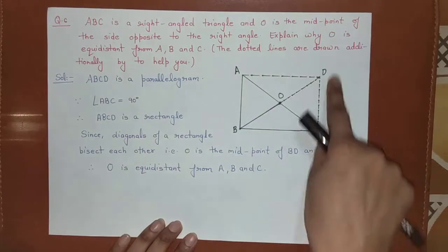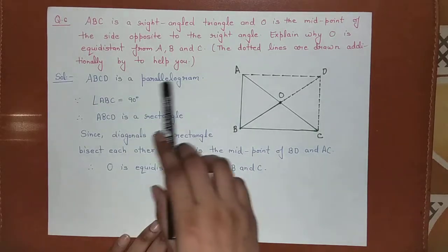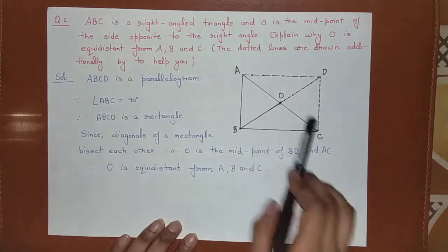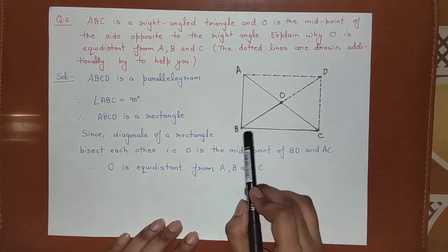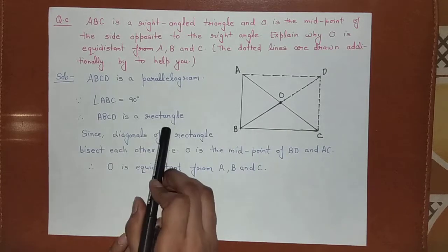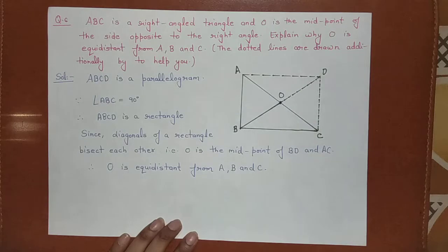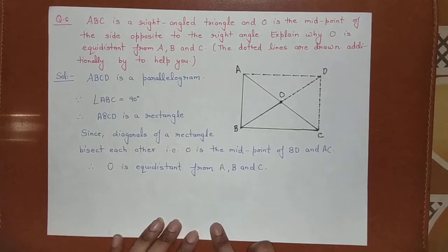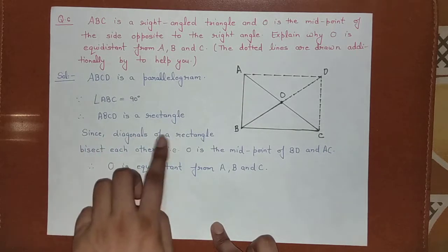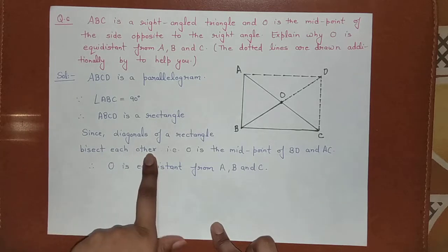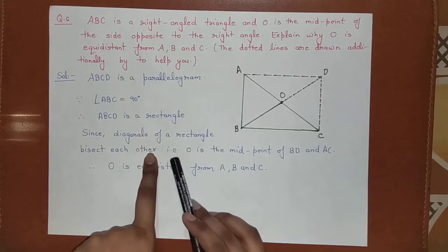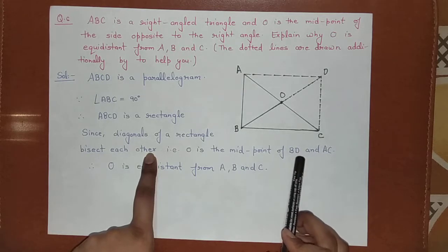ABCD is a parallelogram in which angle B is 90 degrees. Since one angle is 90 degrees, ABCD is a rectangle. Since the diagonals of a rectangle bisect each other, O is the midpoint of both diagonals BD and AC.